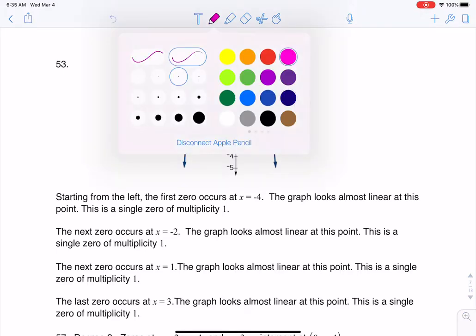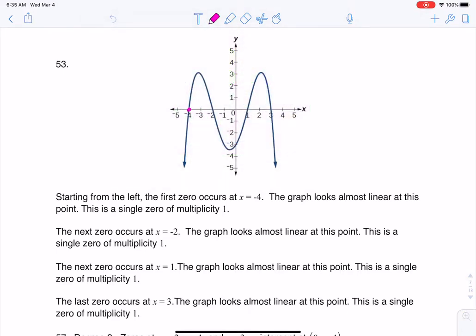So let me just change colors here a little. So I've got a zero here at negative 4, negative 2, 1, and 3. So that's why you see me listing them out. I've got my zero at x equals negative 4, x equals negative 2, x equals 1, and x equals 3.